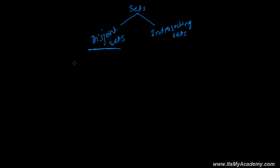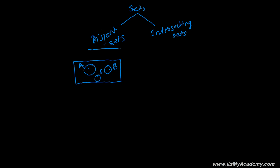What are disjoint sets? In the Venn diagram, if you are drawing a Venn diagram and the sets are completely independent — this is set A, this is set B, this is set C — and none of the elements of A is found in B, and similarly none of the elements of B is found in C. The elements of A are just found in A, elements of B just in B, elements of C just in C. In that case we say these are disjoint sets.